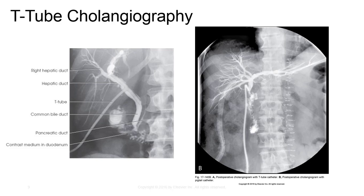The preceding meal is withheld and a cleansing enema one hour before the procedure is administered if needed. Usually a scout KUB is obtained. During the procedure, the patient is placed in the RPO position with the right upper quadrant centered to the IR. Contrast media is then injected into the T-tube under fluoroscopy, and spot and conventional overhead images are taken as indicated by the radiologist.